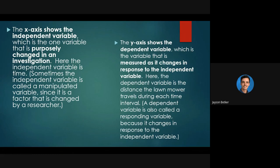So in the example on the last page, the independent variable is time, and the dependent variable is the distance the lawnmower traveled during each time interval — maybe the grass is really long so it's a little bit slower, or maybe the grass isn't long so it needs to go quicker.